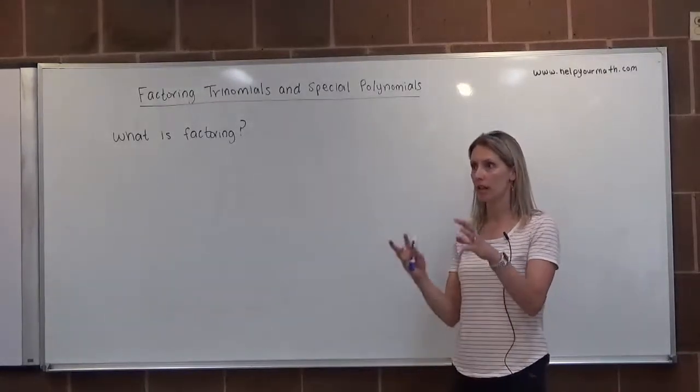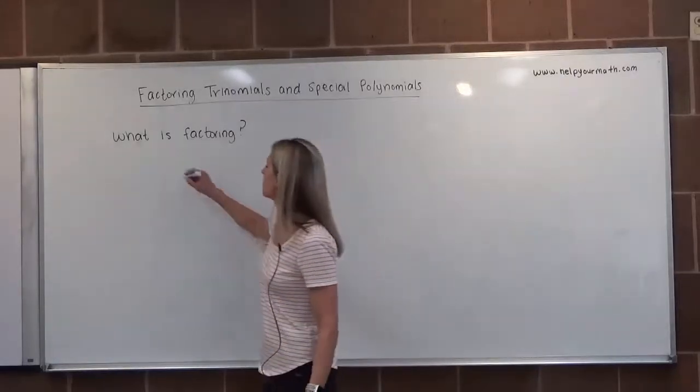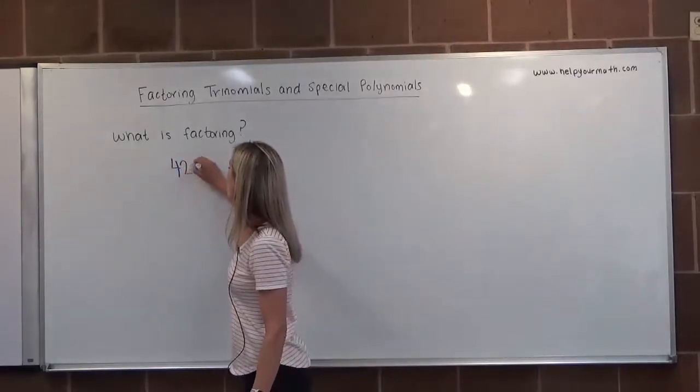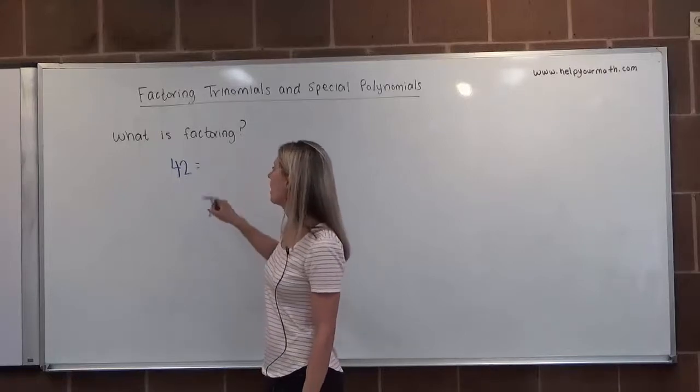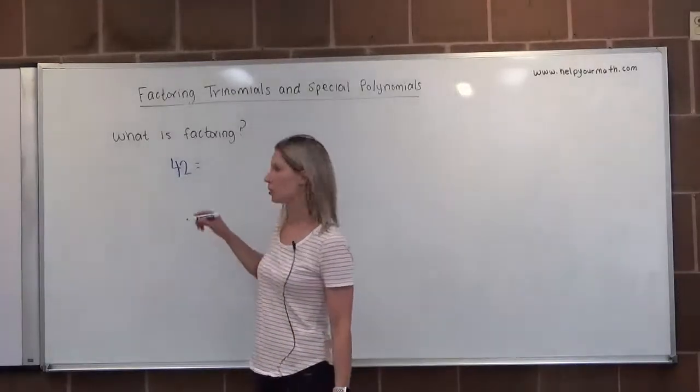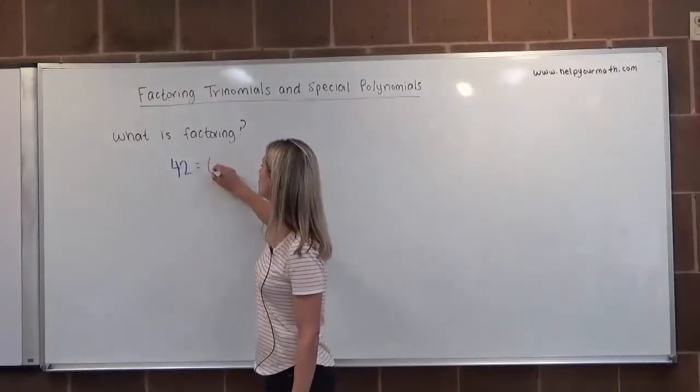Factoring is kind of like when we pull apart a number. So if we have the number 42, we could factor it by writing it as two things that multiply and equal each other, that equal 42, such as 6 times 7.